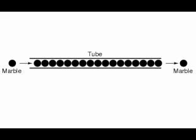A noteworthy observation may be made here. As each electron flows uniformly through a conductor, it pushes on the one ahead of it, such that all the electrons move together as a group. The starting and stopping of electron flow through the length of a conductive path is virtually instantaneous from one end of the conductor to the other, even though the motion of each electron may be very slow. An approximate analogy is that of a tube filled end to end with marbles — if you put a marble in one end, a marble immediately comes out the other end.